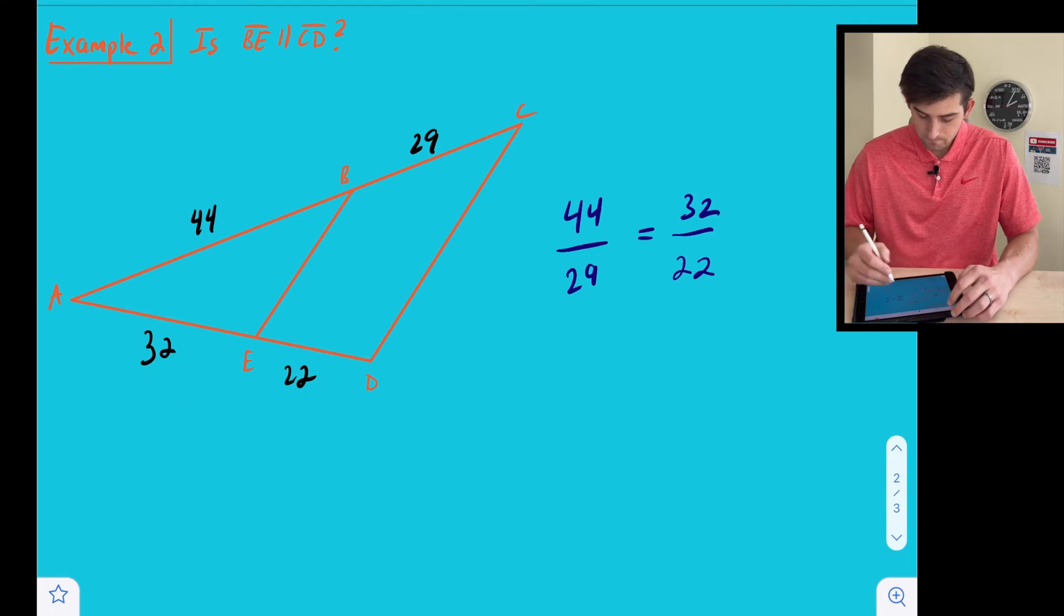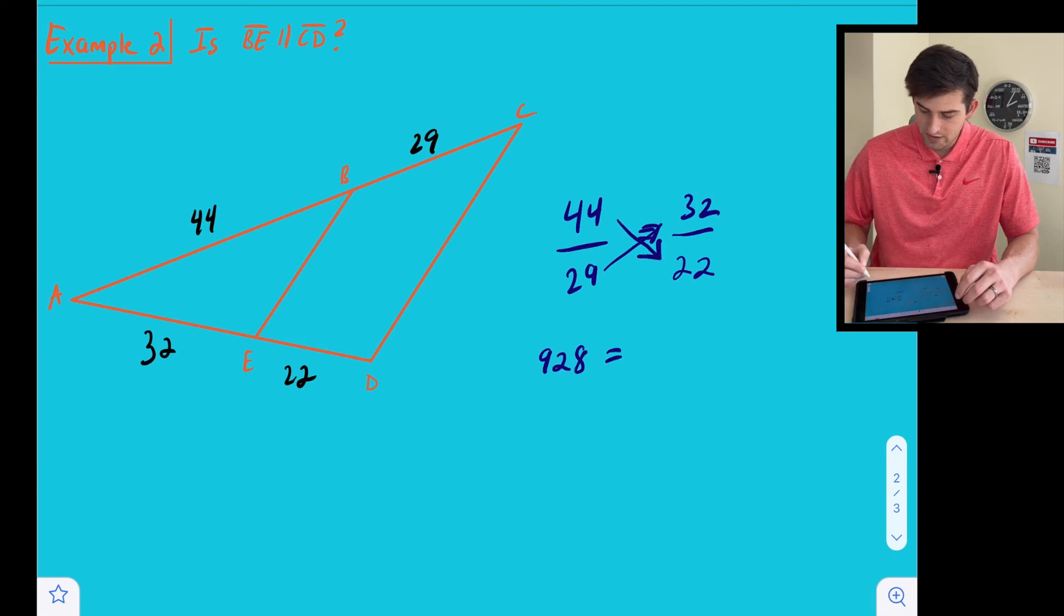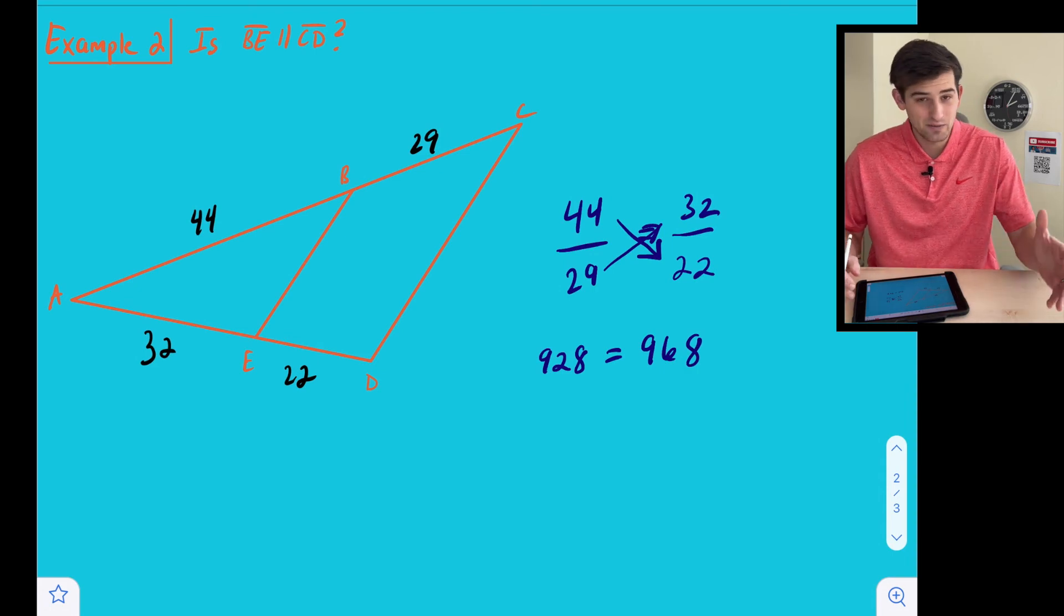So now we can cross multiply. We do 29 times 32, that gives us 928, and 44 times 22, and that gives us 968. So is 928 the same as 968? No.